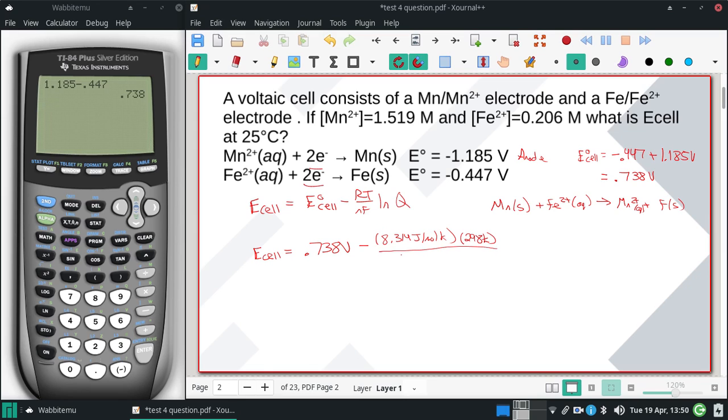Two moles of electrons are exchanged, so n = 2. The Faraday constant is F = 96,485 C/mol e⁻.